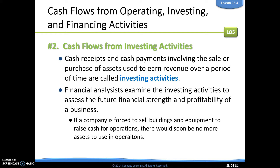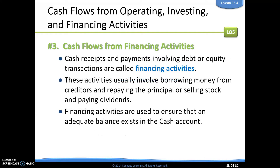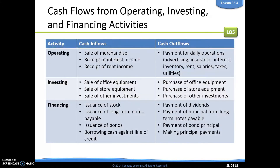If you're not bringing in enough money from operating activities and you have to sell buildings or equipment to raise cash to continue operating, pretty soon you'll run out of assets and be in trouble. The third section is financing activities — any cash receipts and payments revolving around debt or equity transactions, such as borrowing money from creditors, making payments back, selling stock, and paying dividends. We're essentially making sure there is an adequate balance that exists in our cash account.